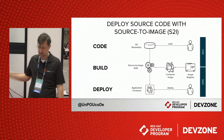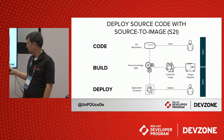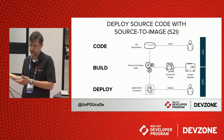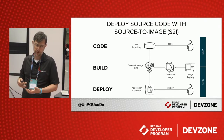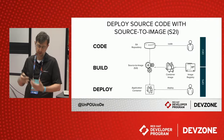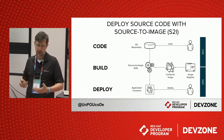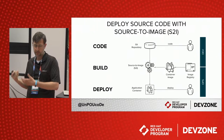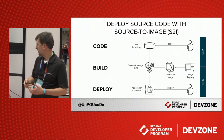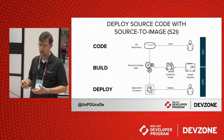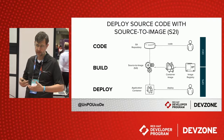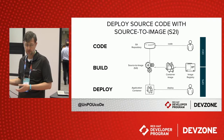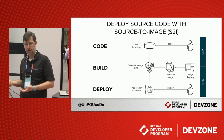This is the process of source to image. In source to image, you start with a source repository, usually a Git repository. You pull down the source code into a Docker builder, and that image builds your application source code using Maven with supporting images, then layers it on top of a Docker container. That container is pushed into an image registry and is ready to deploy.